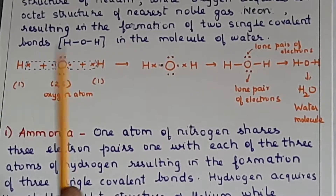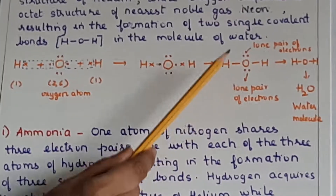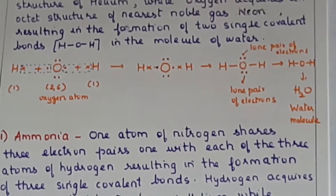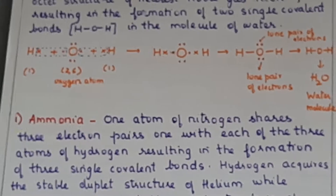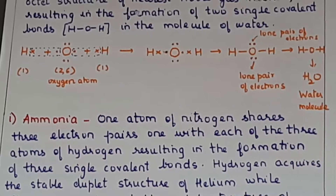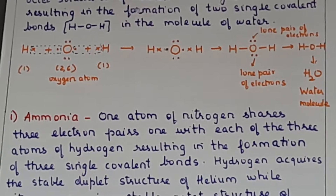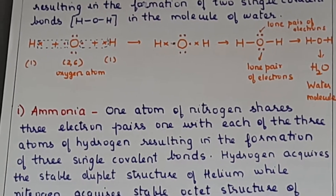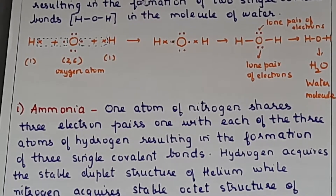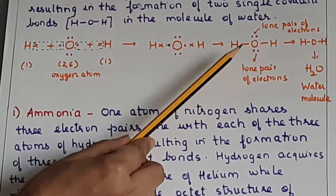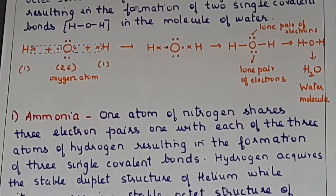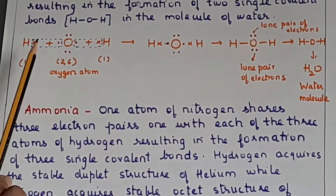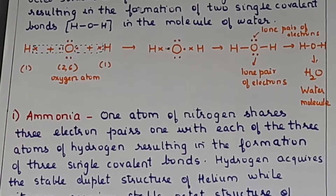The electrons not involved in bonding in the water molecule are called lone pair of electrons. You must mark the lone pair of electrons in the water molecule - if you don't mark it, you lose marks. These lone pairs are not involved in bonding but will be contributed in the formation of a coordinate covalent bond. One water molecule has two lone pairs of electrons. Give five stars to this - it is very important.